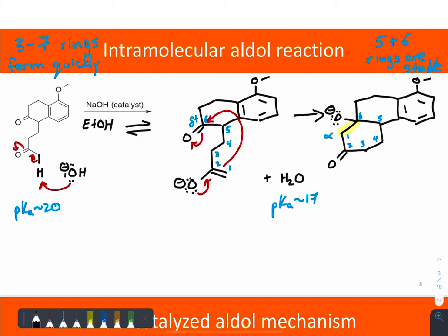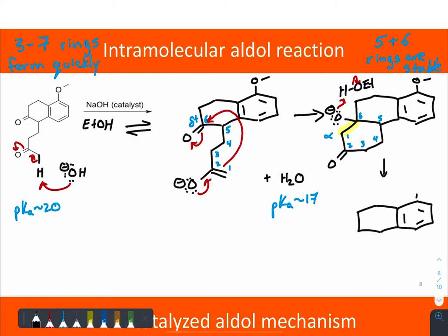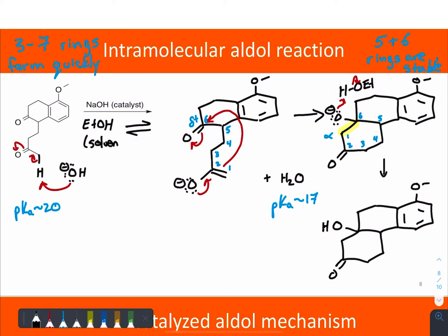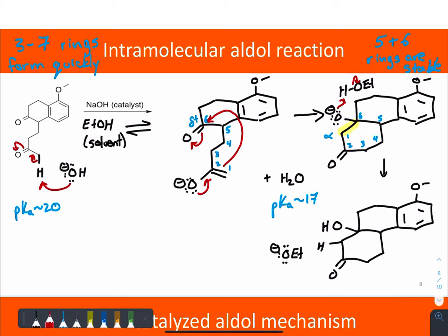We could have specified the solvent here — say ethanol is the solvent. This is another case that fits the conditions for an elimination or condensation step. So with that polar protic solvent and under basic conditions, that ethoxide can deprotonate, generating another enolate.